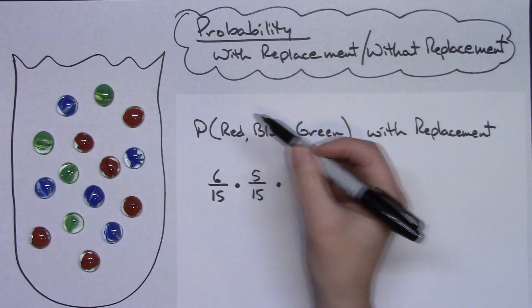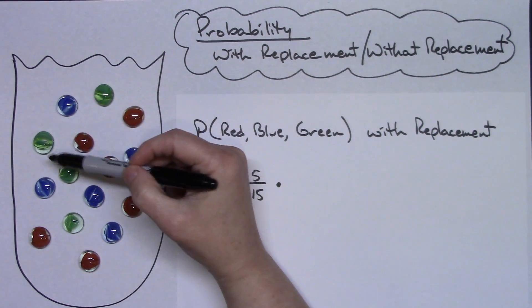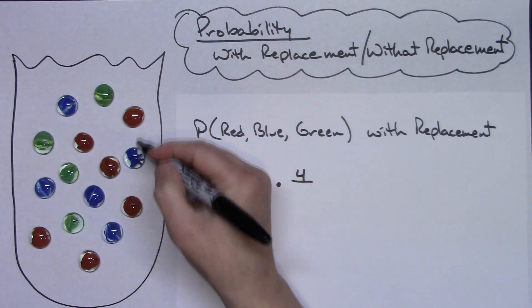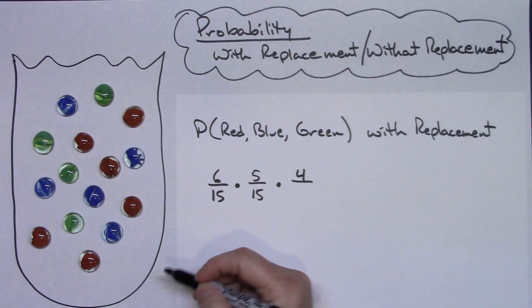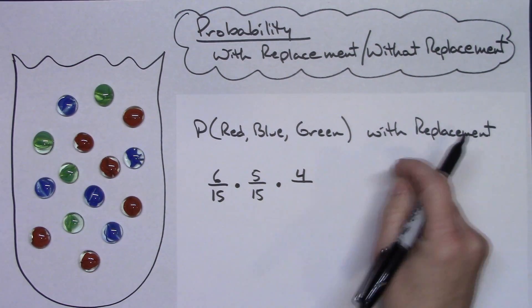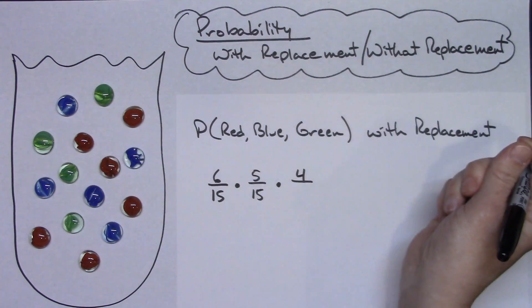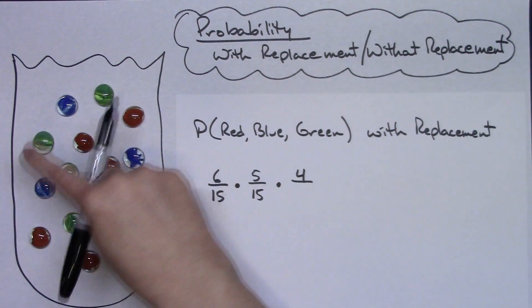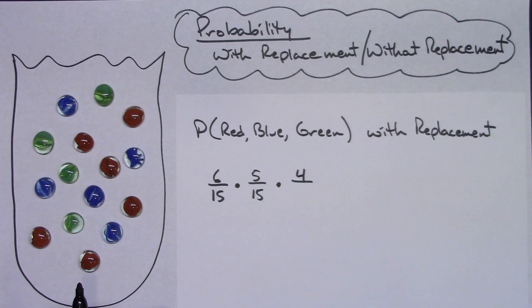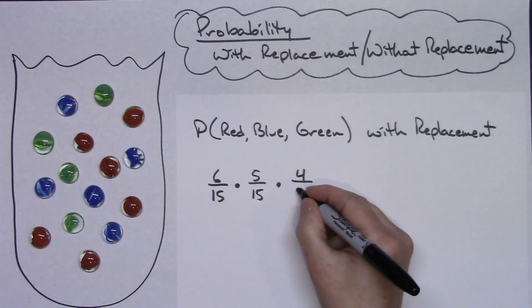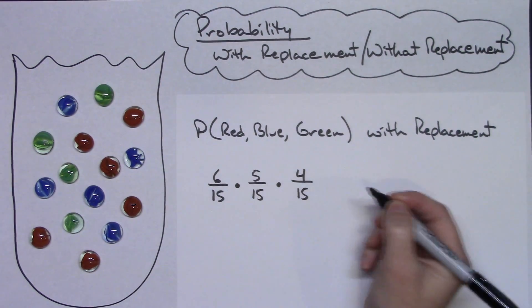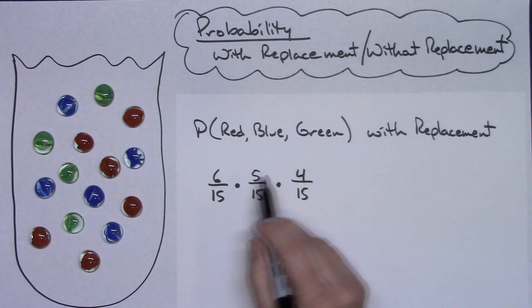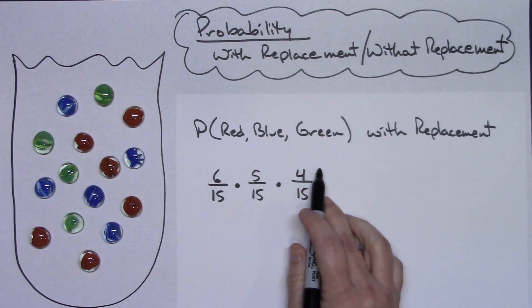There are four green marbles and still a total of 15, because with replacement I put the second marble back in the bag. So that's four-fifteenths. This is straight multiplication — multiply across the top and across the bottom.